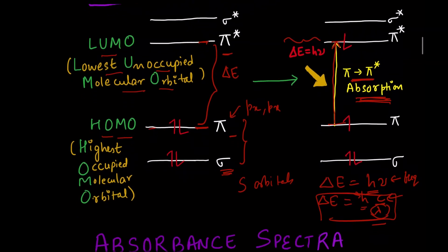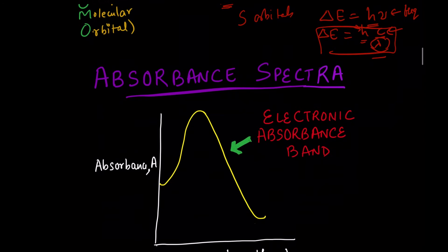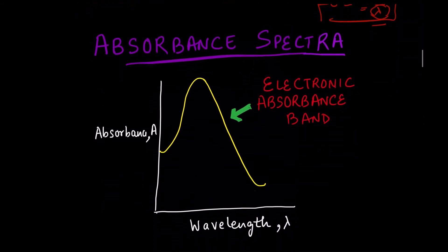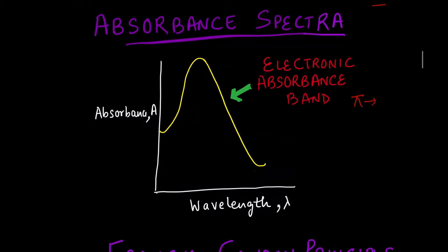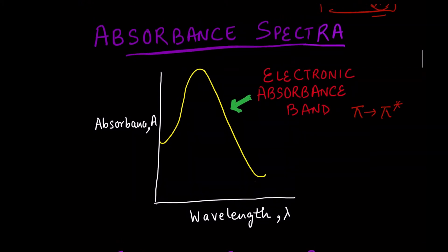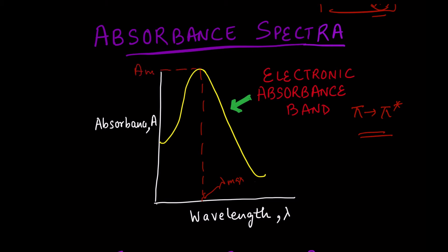Let us now look at how those bands appear. This absorbance spectrum results from the pi to pi star transition. As you can see, there is an intense transition corresponding to a specific wavelength — this is lambda max, and it corresponds to the maximum absorbance.